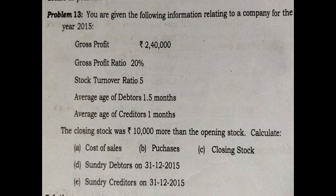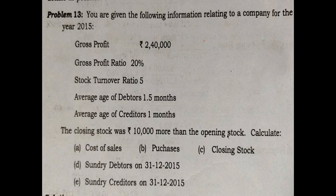You are given the following information relating to a company, whereby gross profit is 2,40,000, gross profit ratio is 20%, stock turnover ratio is 5, average age of debtors is 1.5 months, average age of creditors is 1 month, and the closing stock was Rs. 10,000 more than the opening stock. Calculate: cost of sales, purchases, closing stock, closing debtors, as well as closing creditors.